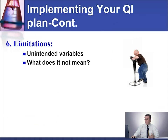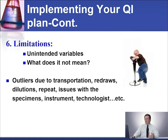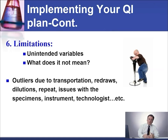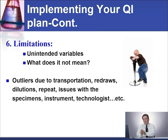Limitation means unintended variables. It means that you might have outliers due to transportation, redraws, dilution, repeat issues with the specimen, instrument, technology, et cetera. An outlier should be excluded from the calculation. Or if you have a lot of outliers, you can show the indicator with the outliers — which usually looks bad — and also show the indicator without the outliers, so we have to take care of them. Maybe you can do a separate indicator about the outliers.